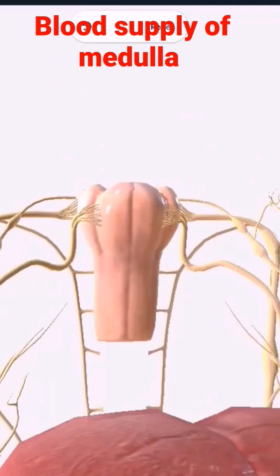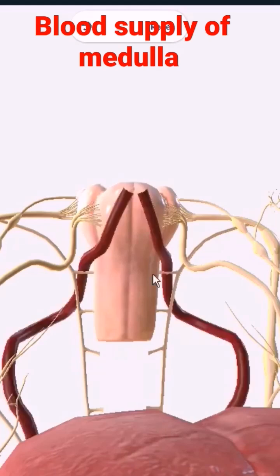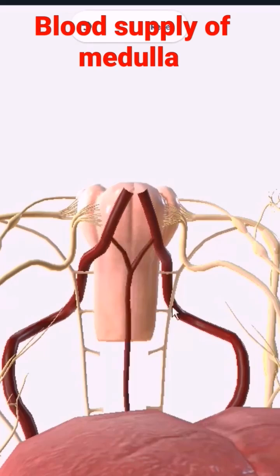There are two vertebral arteries, and as they ascend upward they combine to form the basilar artery. It is the vertebral artery which supplies the medial part of the medulla, as well as the anterior spinal artery. Here we have the anterior spinal artery shown.